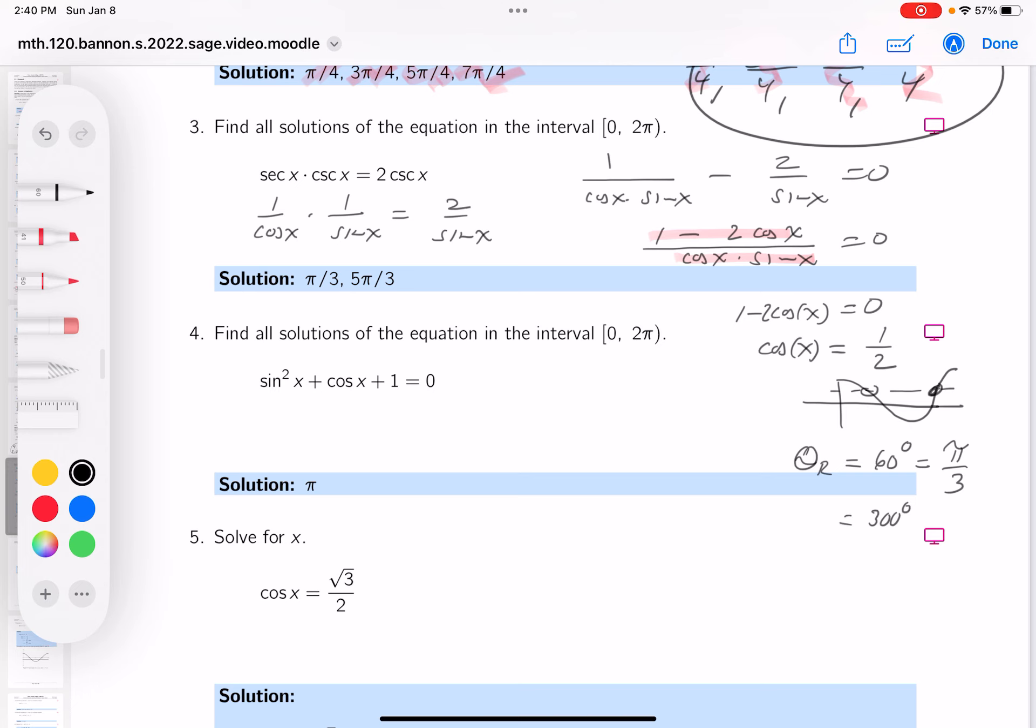All right, so one of the angles we got, this is one. The other one we got, we know, is pi over 3 in the first quadrant. It's the reference angle. What's 300 degrees in terms of radians? That's going to be 5 pi over 3.